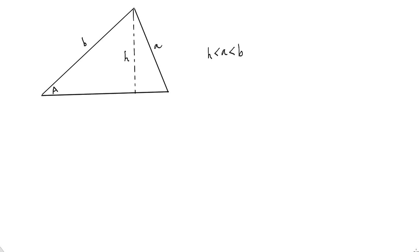Now we're going to look at the ambiguous case of the law of sines for the SSA situation, where we're given two sides and an angle that's not between them, and talk about the case where you get two triangles. Part one of this ambiguous case video was about situations where you get no triangle or one triangle. Here we're going to talk about the situation where you can get two triangles.